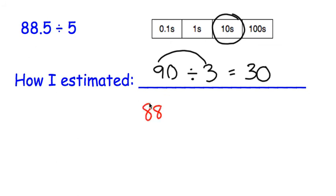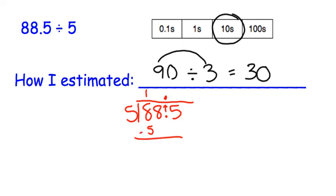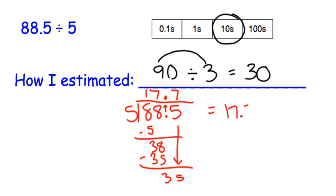I'm going to do this quick division so we can see if our answer is in the tens place. With the traditional method, you can leave the decimal in your first number and transfer it straight up. So I'm going to put that decimal in my answer and do some quick division. We get 17 and 7 tenths, which is in the tens place, so we know that we are correct.